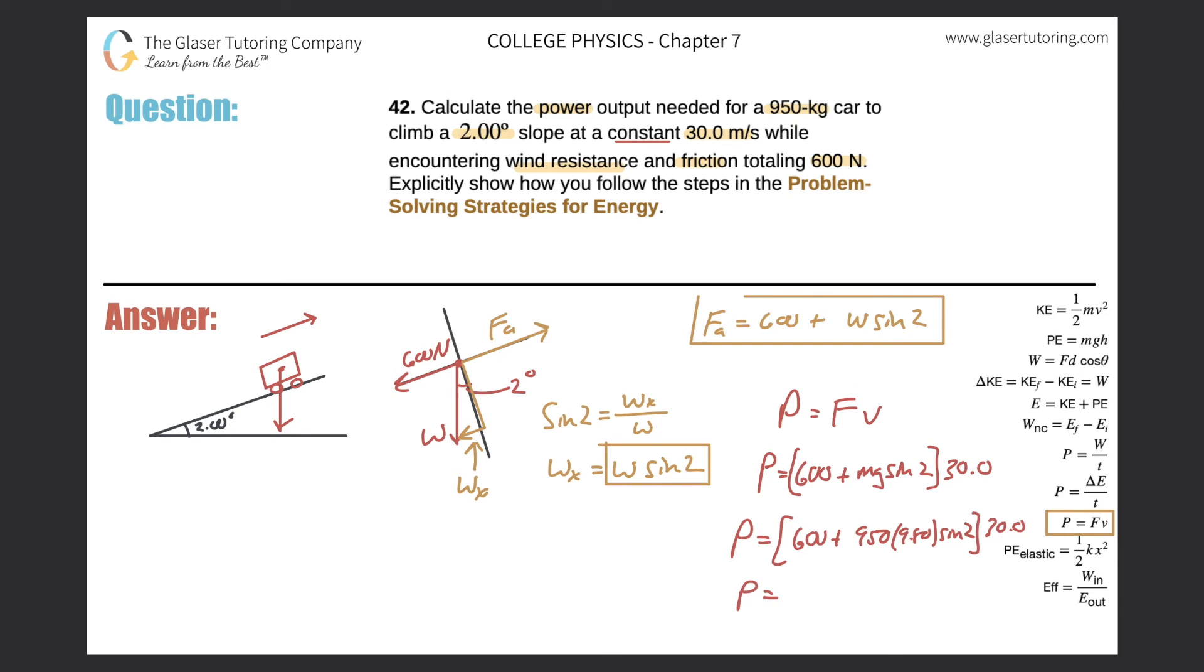So it's going to be 600 plus 950 times 9.8 times the sine of two, and that all multiplied by 30. And we get about, yeah, we'll do 36 figs. So it looks like it's going to be about 2.77 times 10 raised to the fourth. And that will be in watts. And that would be the final answer.